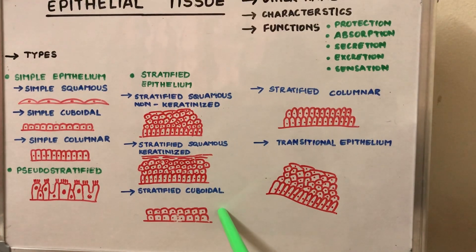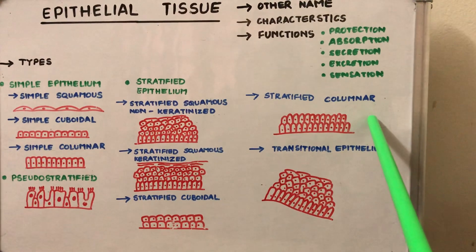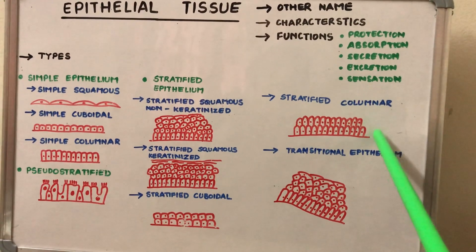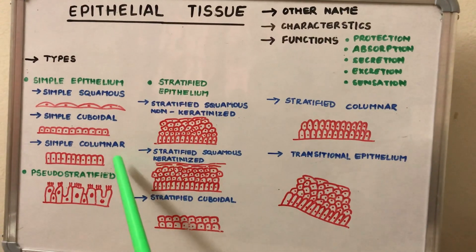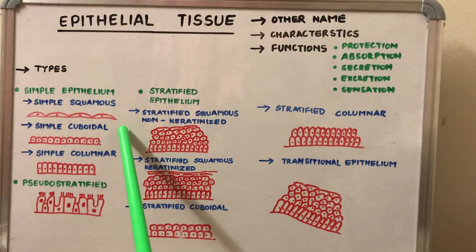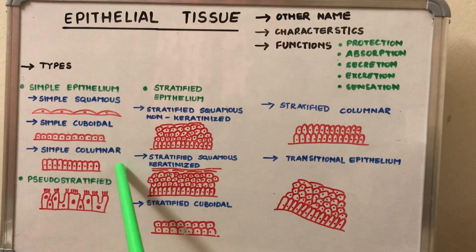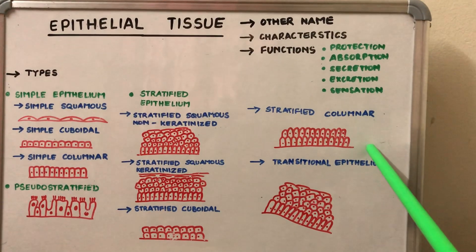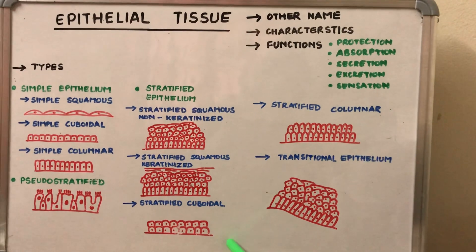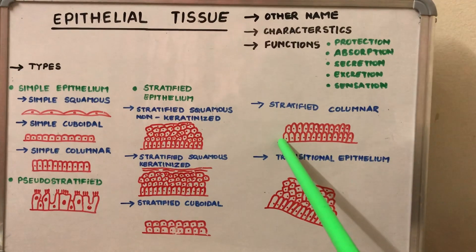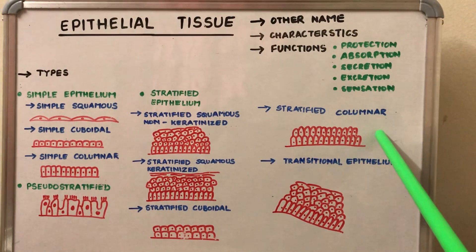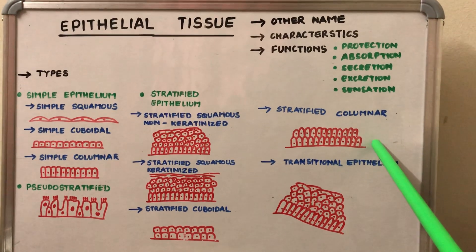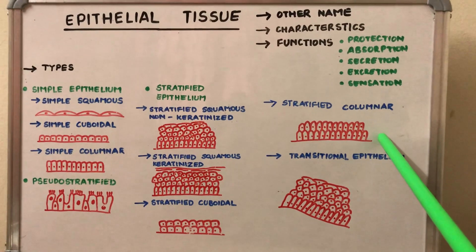The stratified columnar epithelium is made up of two layers of columnar cells. The simple epithelium had one layer of cells, whereas the stratified cuboidal and columnar are made up of two layers. The stratified columnar epithelium is present in the anal mucous membrane, the urethra, and the conjunctiva of the eye.